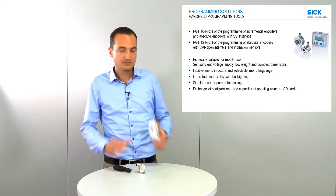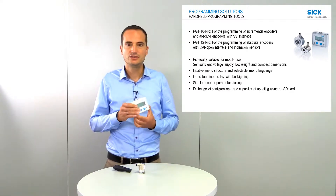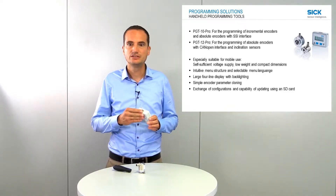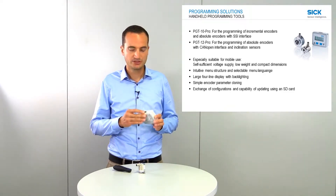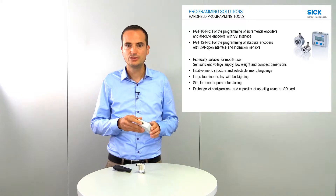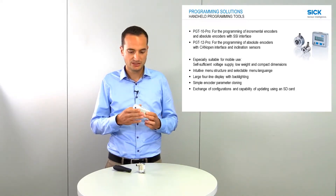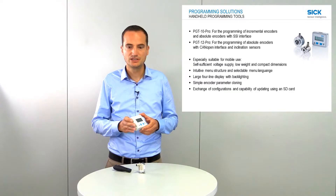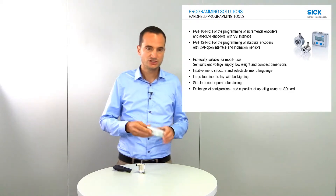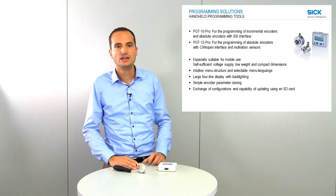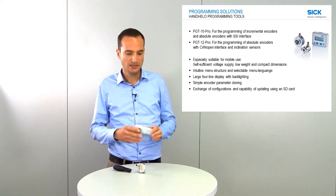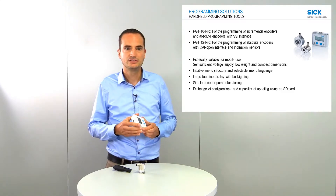The programming tools both look nearly the same — a pocket-sized programming tool. The encoder is connected either via adapter cable or with a so-called terminal box to the programming tool. You can program the encoders immediately without installation of external software on a PC. Another advantage is that you can easily use it in a mobile context, as it has a self-sufficient voltage supply, very low weight, and very compact dimensions.